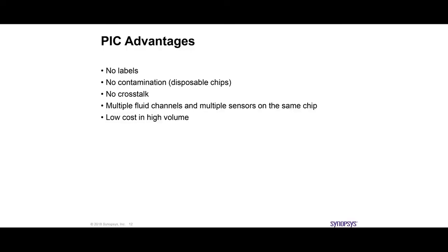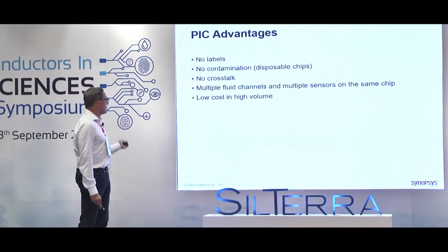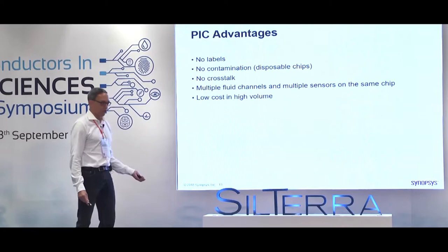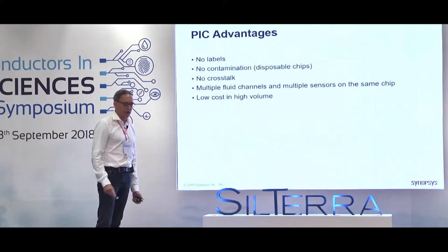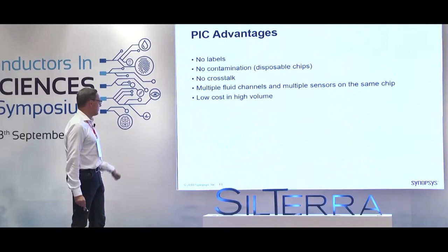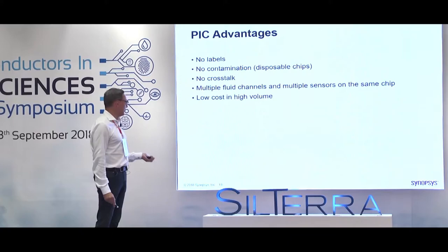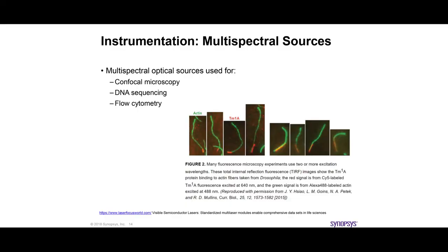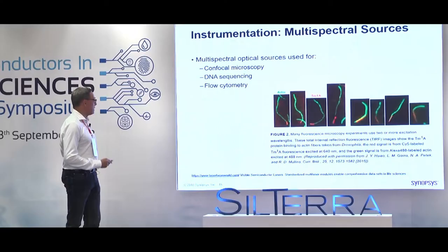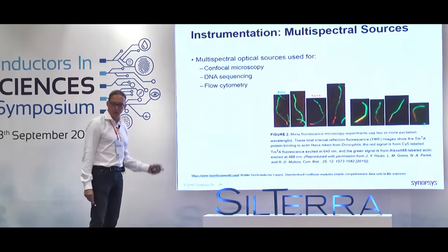The key advantages for this application: it's a label-free solution, no contamination because these are disposable chips used once and thrown away, no cross-talk between sensors, integration possibilities, and at high volume you get low cost. Multi-spectral sources are used a lot in biosciences: confocal microscopy, DNA sequencing, and flow cytometry.